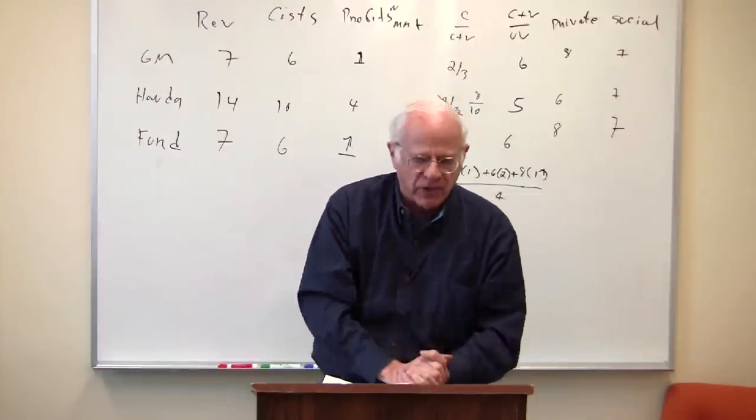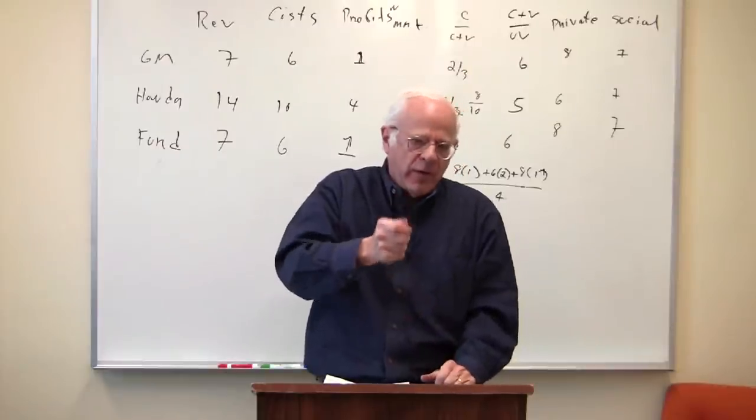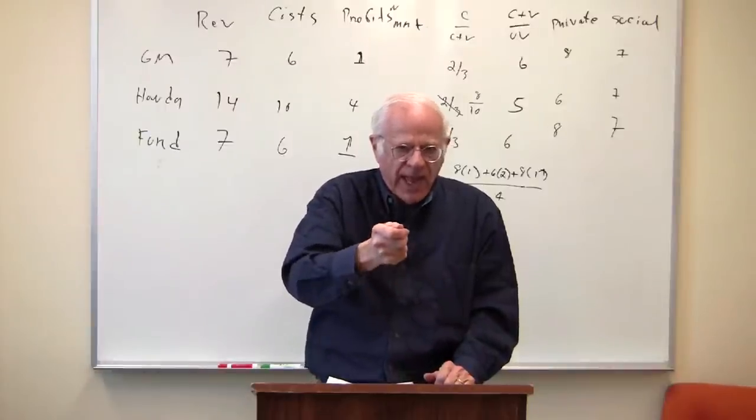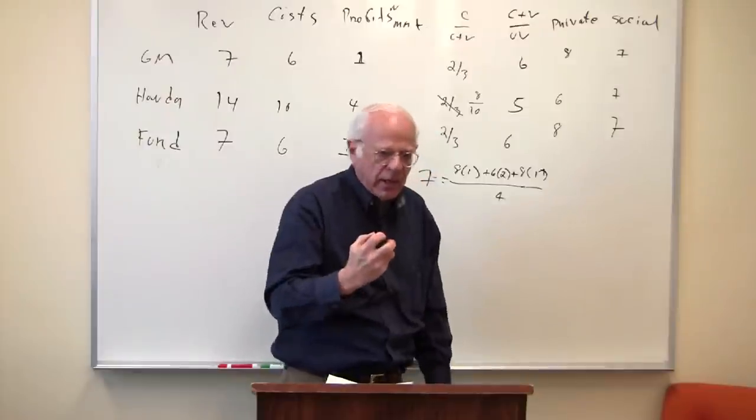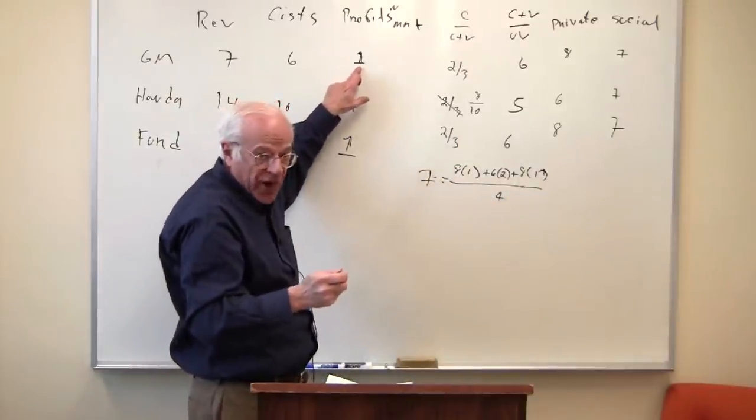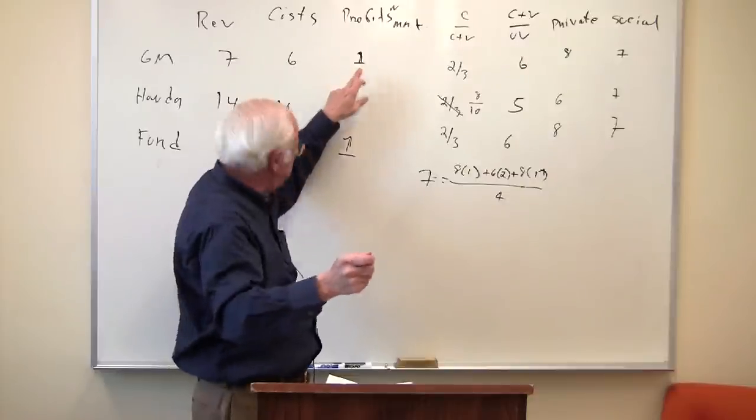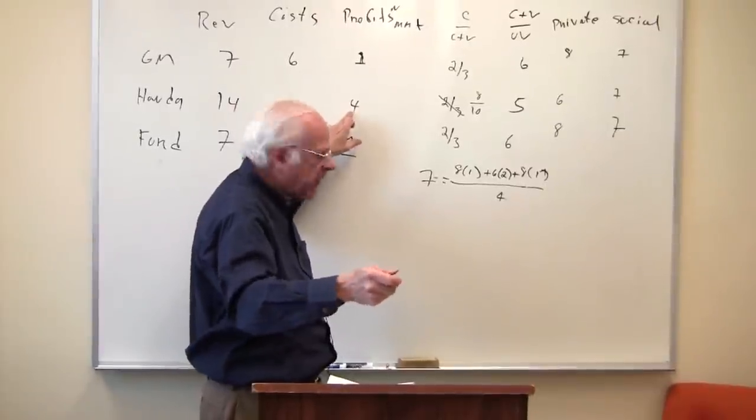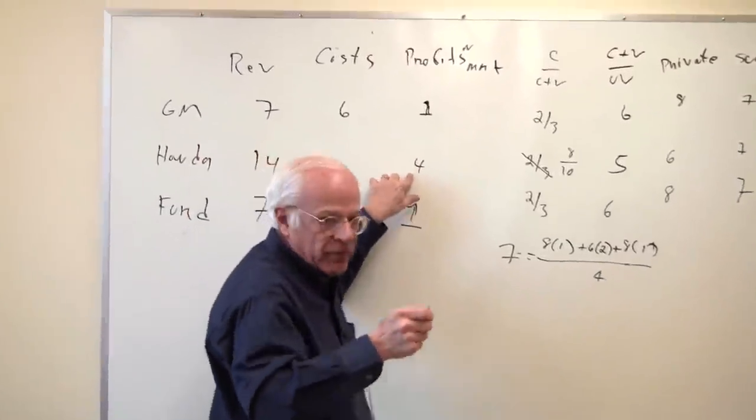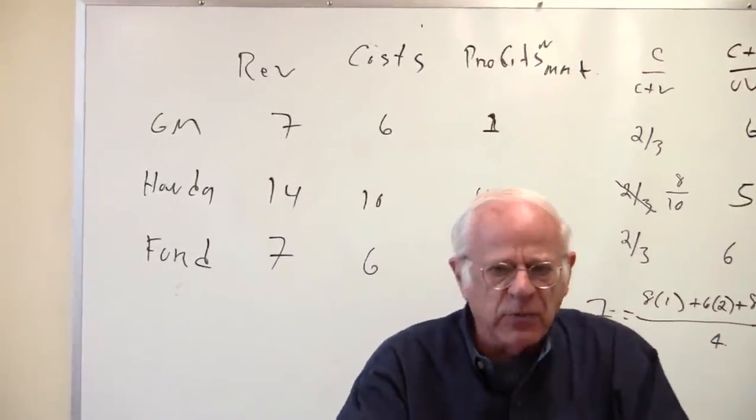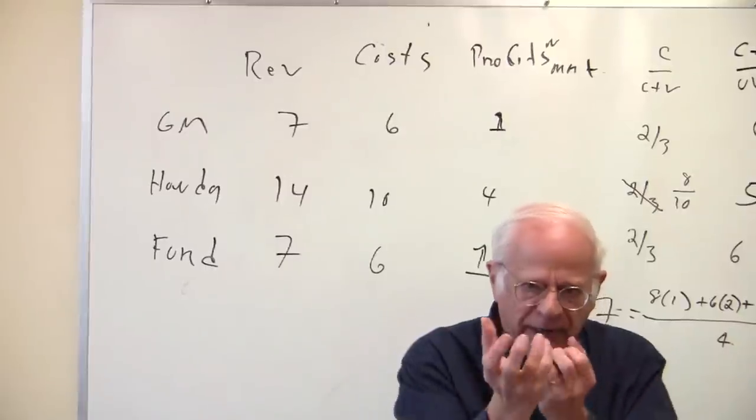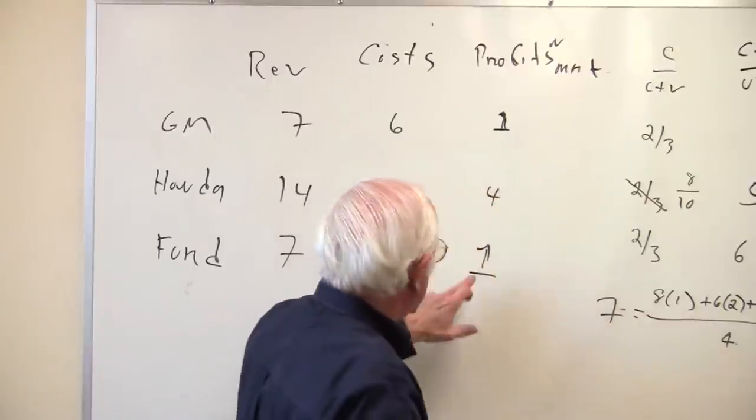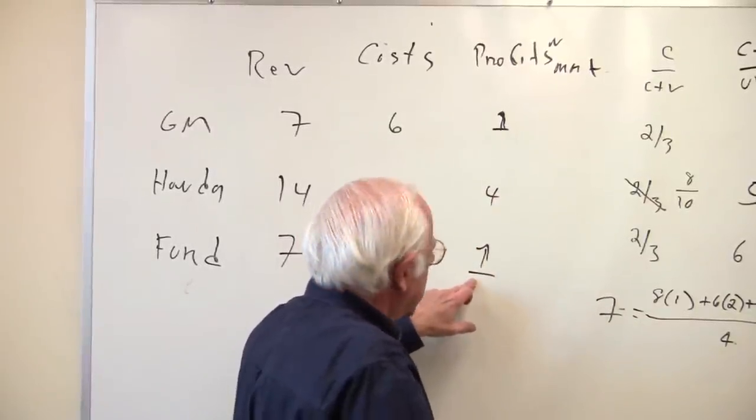What Honda has done through its offensive action, by going out and raising its composition of capital, raising its productivity, has taken away profits from General Motors and Ford to itself via this market competition. So Honda's profits have gone up from 2 to 4. It's still exploiting its workers by 2, but it is, via the market, taking away some of the surplus, a dollar from General Motors and Ford to itself.